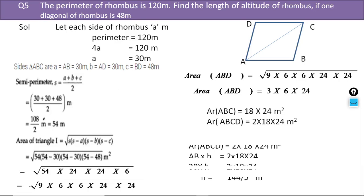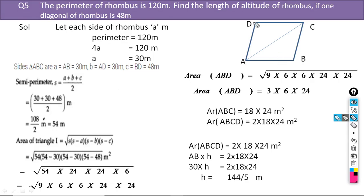In the next step, we compare the area with base into height. The base will be the side AB = 30, and we calculate the altitude h. So 30 × h = 2 × 18 × 24. By simplifying, the value of h equals 144/5 metres.